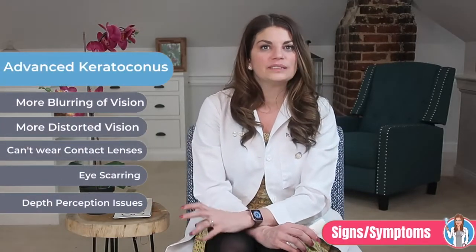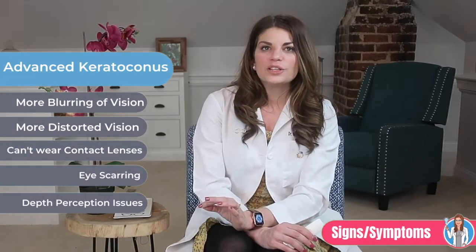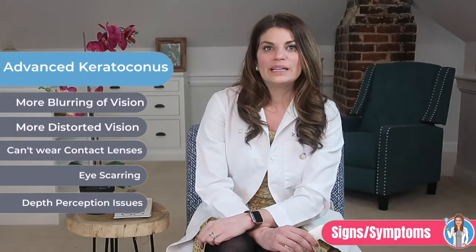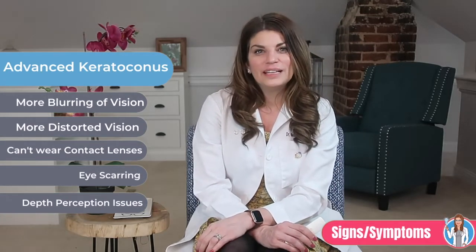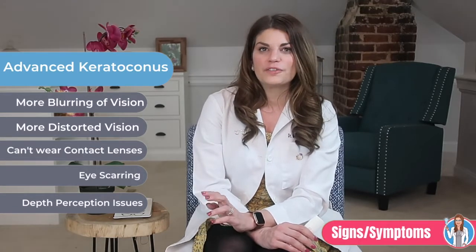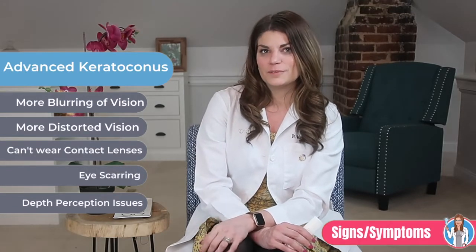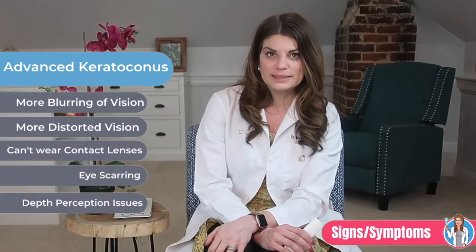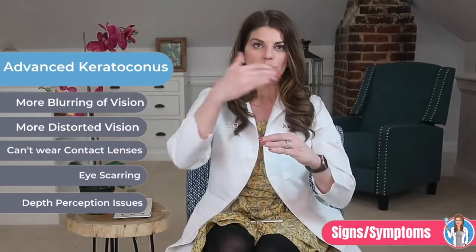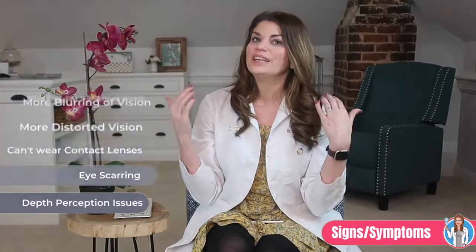In later stages, keratoconus symptoms often include more blur and distorted vision, increased nearsightedness or astigmatism when your eye can't focus as well as it should. As a result, you might need new eyeglass prescriptions often, or soft contact lenses may no longer fit properly and might be uncomfortable. At that point, you might need hard lenses, RGPs, mini sclerals, or even scleral designs, because those vault the cornea, trapping tears and giving you a more normal refractive surface, eliminating the extra glare and visual difficulty.